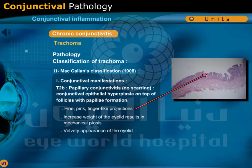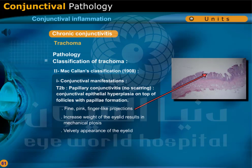T2B: papillary conjunctivitis with no scarring. Conjunctival epithelial hyperplasia on top of follicles with papillary formation — fine, pink, finger-like projections. Increase in weight of the eyelid results in mechanical ptosis. A velvety appearance of the eyelid is present.